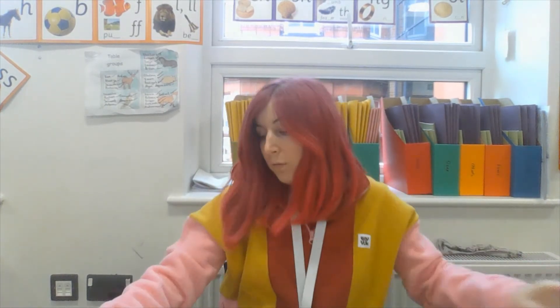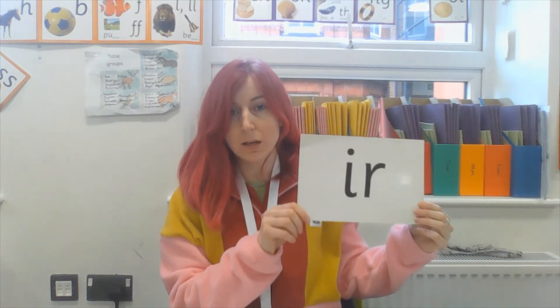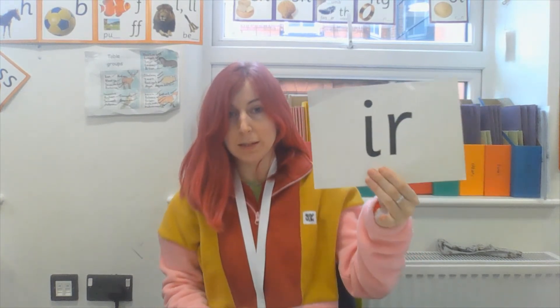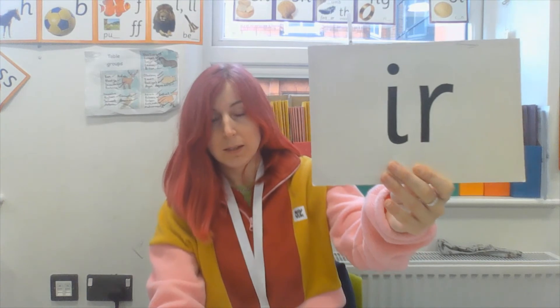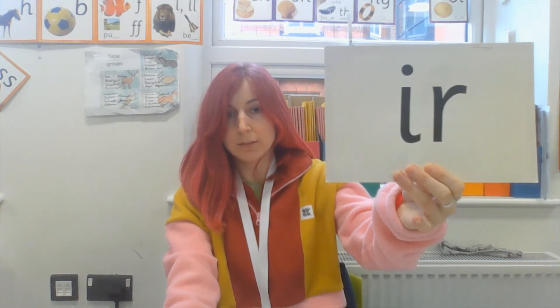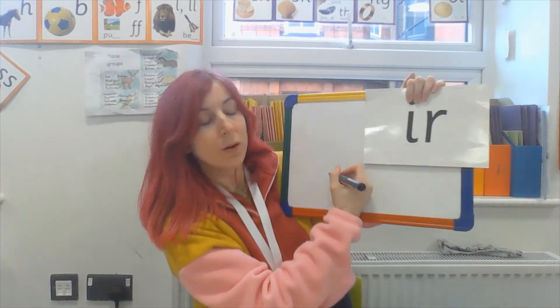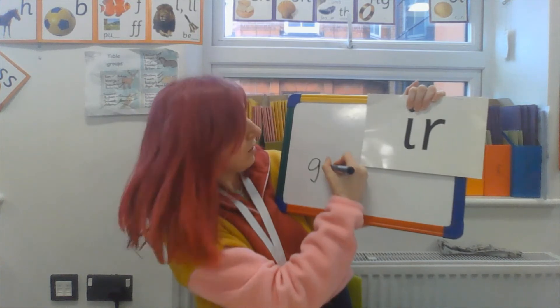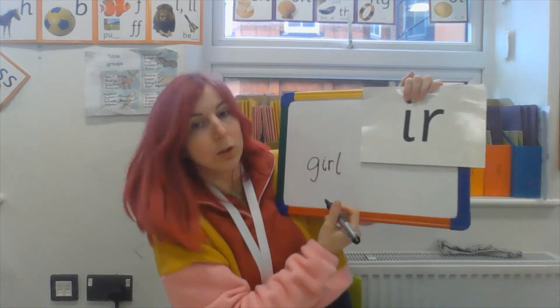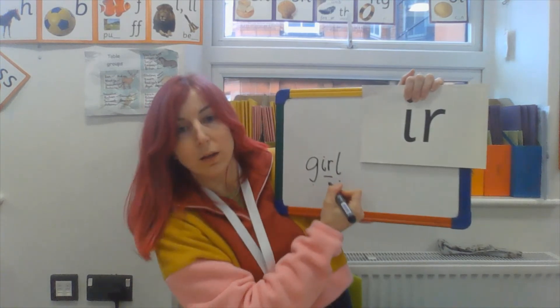Pencils and paper at the ready for our 'ir' words that we're going to practice today. The first 'ir' word I want you to have a go at is 'girl' - G-ir-L - girl. I'm going to keep this held up so you can see. You can pause the video here to help you write, then restart when you're finished. So we're going to write the word girl: G - ir - L - girl. Good job.